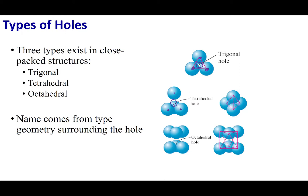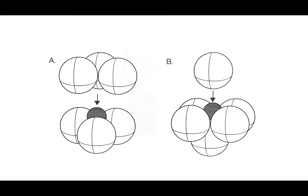The last hole I want to talk about is the octahedral hole. This hole is created by six spheres coming together. You can envision three spheres on top and three spheres on the bottom, with the hole residing in between. An alternate view shows all six things coming together — this is the hole where an incoming atom can sit, and we can look at it from a different angle as well.